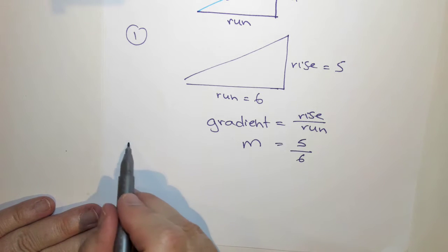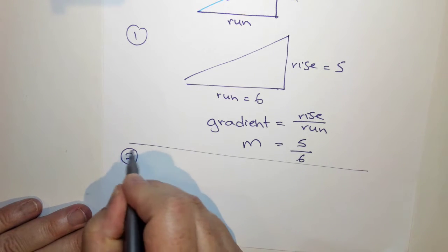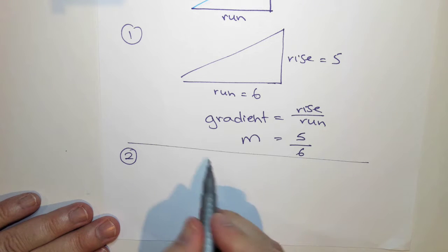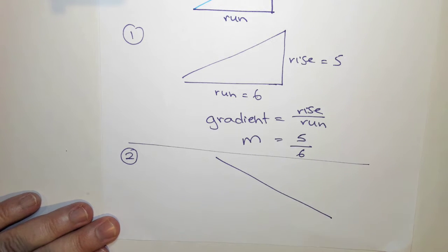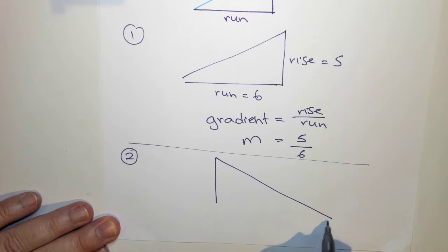That's one example. What about a different example? What if our gradient is going downwards, like rolling down a hill? So now let's think about that.